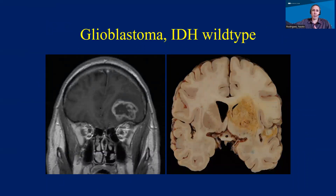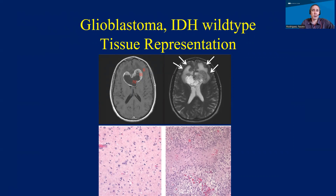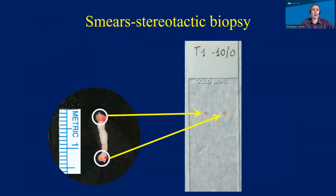Glioblastoma is grade 4 by definition and lacks, by definition, any alteration in IDH1 or IDH2. It is characterized by large masses with necrosis that can be identified at the radiologic level. Another important issue when looking at pathologic specimens is tissue representation — in the brain, it can be very difficult to obtain a lot of material without causing injury, depending on where the tumor is. Sometimes smaller biopsies from the edge of the tumor may show low-grade histology. This is increasingly superseded by genetic analysis, because genetic alterations are usually more spread throughout the tumor, so even small pieces can yield precise molecular characterization.